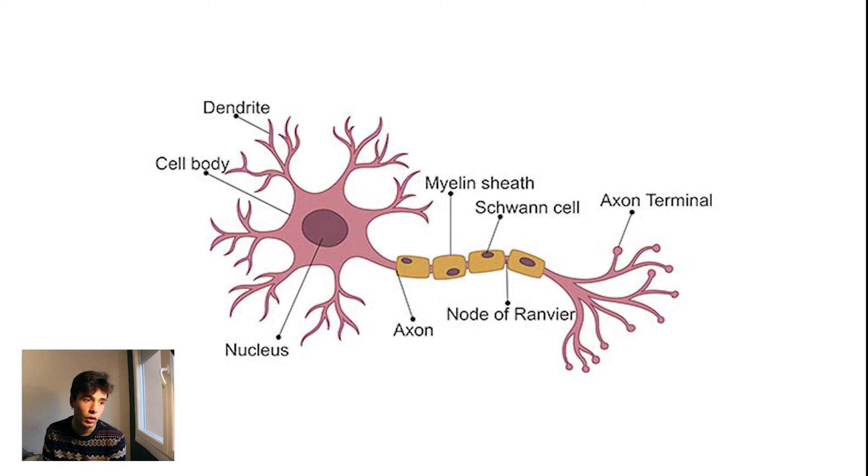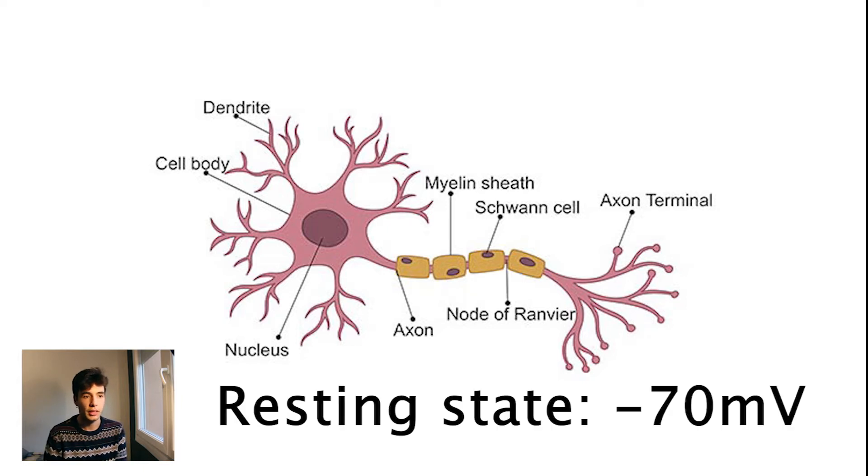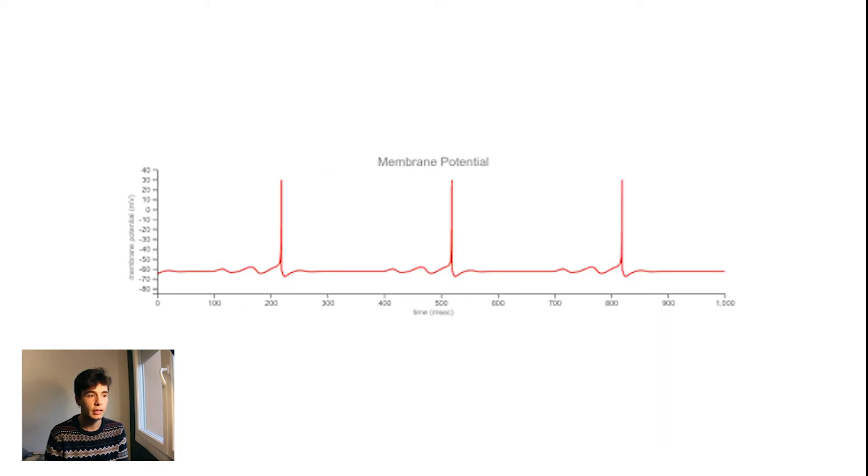There's always current in a neuron, otherwise you would die. In other words, having current means that the neuron is alive, and the voltage of a neuron in resting state is of minus 70 millivolts approximately, and when it is excited it spikes.